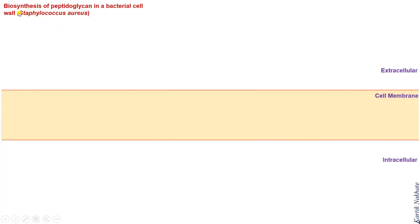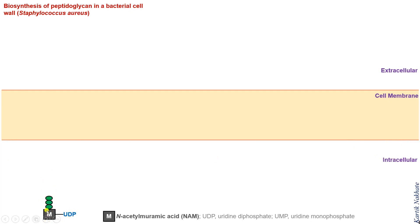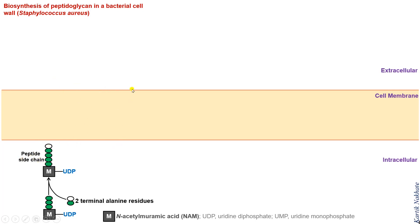Now let us see in brief the process of biosynthesis of peptidoglycan in a bacterial cell wall, for example in Staphylococcus aureus. The synthesis of building blocks of peptidoglycan occurs on the cytoplasmic side of the cell membrane. Initially, in the tripeptide side chain of UDP-N-acetyl muramic acid amino sugar, two terminal alanine residues are incorporated to ultimately form the pentapeptide side chain. The cytoplasmic building blocks are hydrophilic in nature and therefore it is problematic for a bacterial cell to transport them outside through the hydrophobic cell membrane.